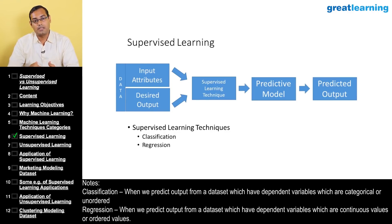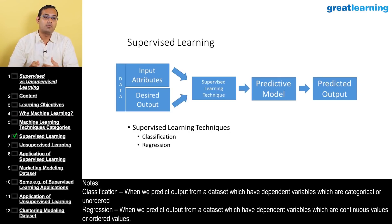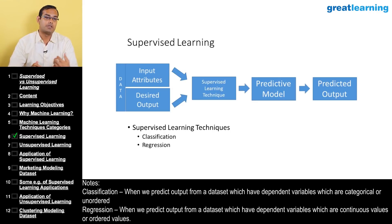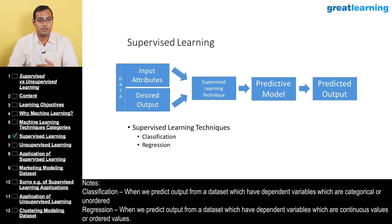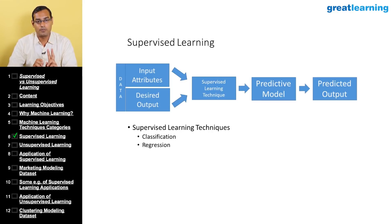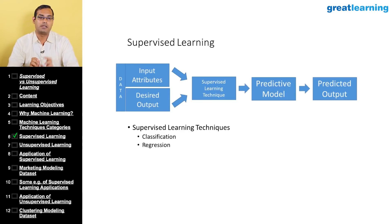Regression applies when the target variable is continuous. For example, predicting the amount a customer is going to spend on a credit card based on past purchase patterns is a continuous target variable prediction, and we call that a regression process. So supervised learning techniques have two broad classifications: classification and regression.